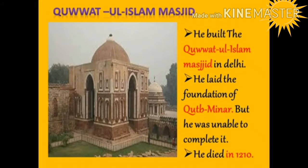Students, look at this picture. This is Quwwat-ul-Islam Masjid in Delhi. This mosque is considered to be the oldest in India, built by Qutbuddin Aibak. He also laid the foundation for Qutb Minar, but was unable to complete it. It was later finished by his son-in-law and successor, Iltutmish. Aibak died in 1210.